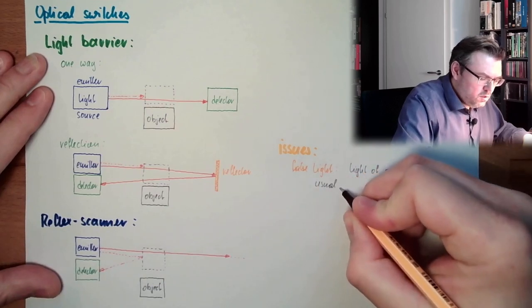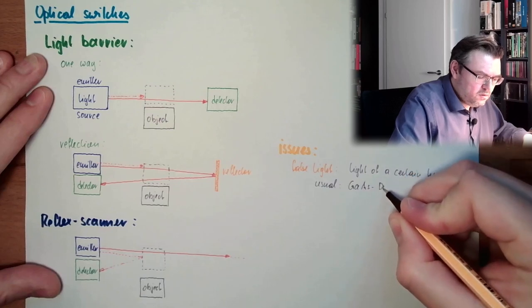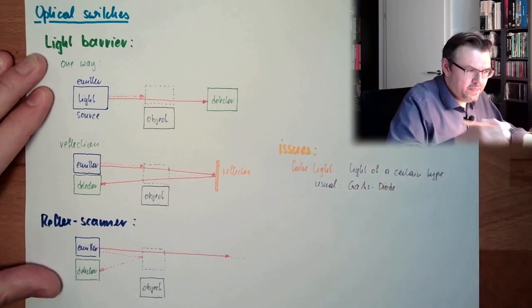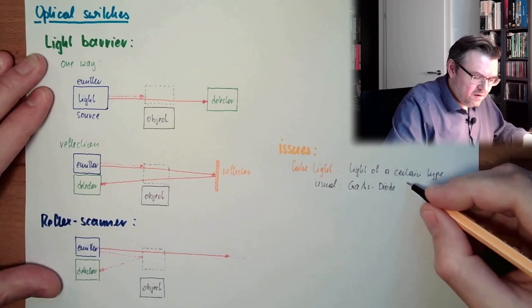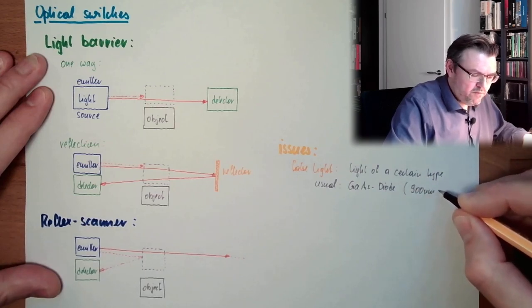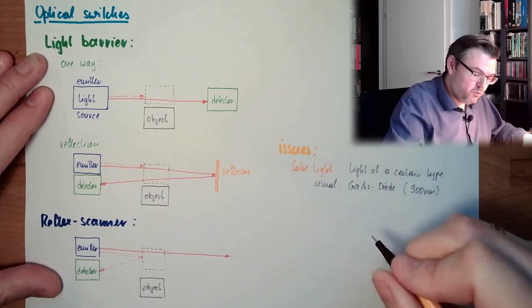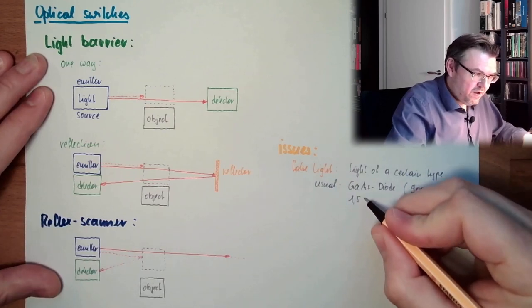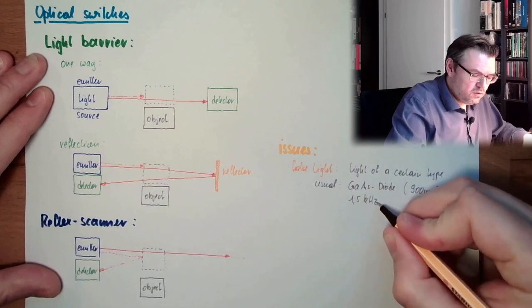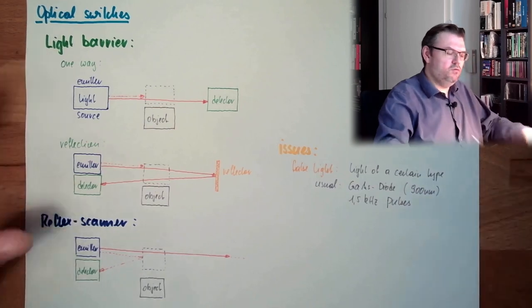So usual is we are using gallium arsenide diode. This emitting light of around 900 nanometers wavelength. And this is not constant, it's pulsed, 1.5 kHz is a usual way.